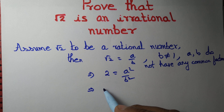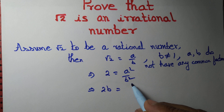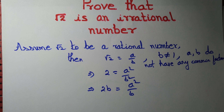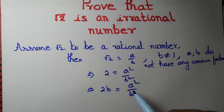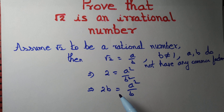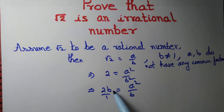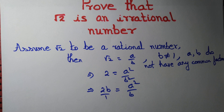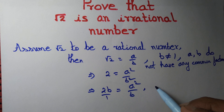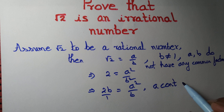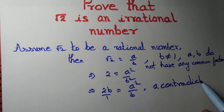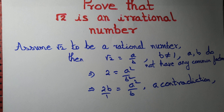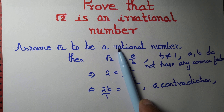Now let's take b to the right-hand side to obtain 2b = a²/b. Since a and b do not have any common factor and b ≠ 1, the right-hand side a²/b is a fraction, whereas the left-hand side 2b is an integer. So we obtain a contradiction.